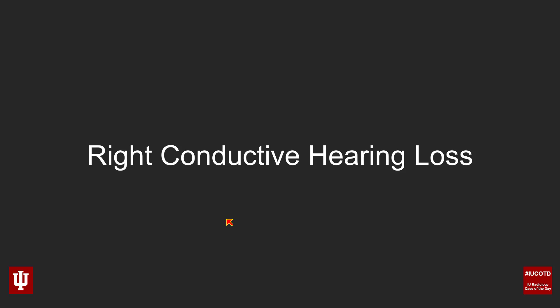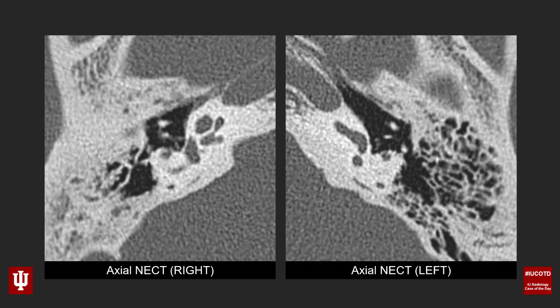The history in this case is a patient who had long-standing right-sided conductive hearing loss. We have two images to look at: the image on screen left is from the patient's right side — an axial non-contrast temporal bone CT — and the image on screen right is from the patient's left, also an axial non-contrast temporal bone CT. Keep in mind that clinical history as you try to figure out what's going on.